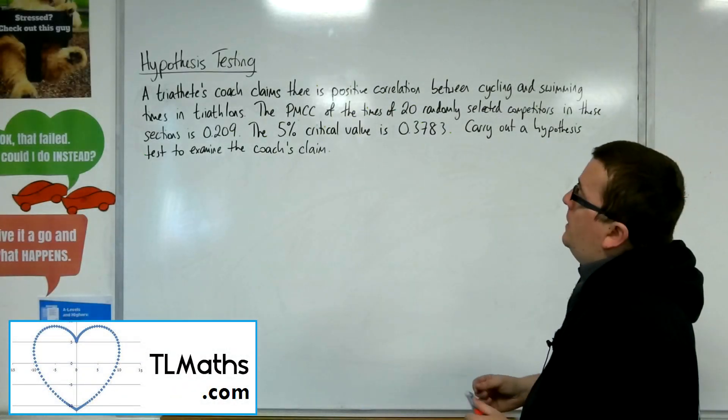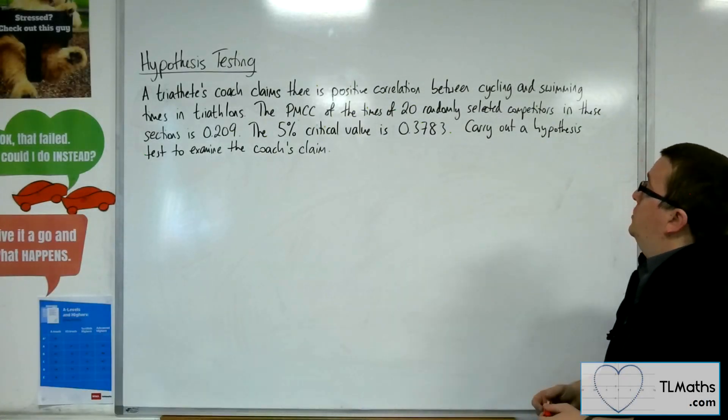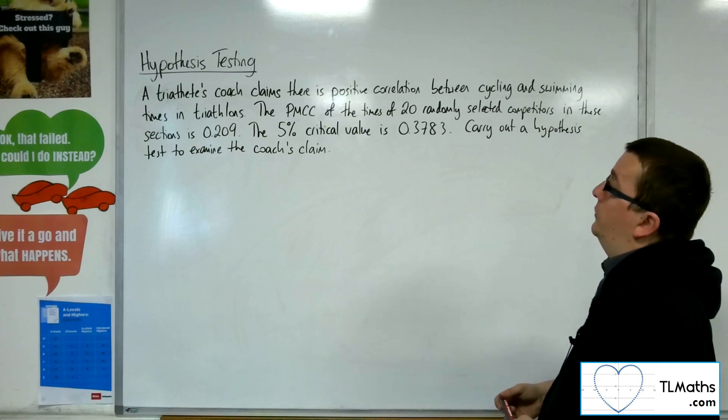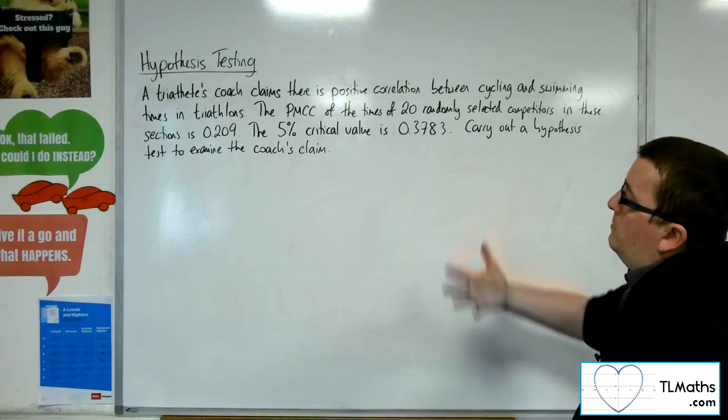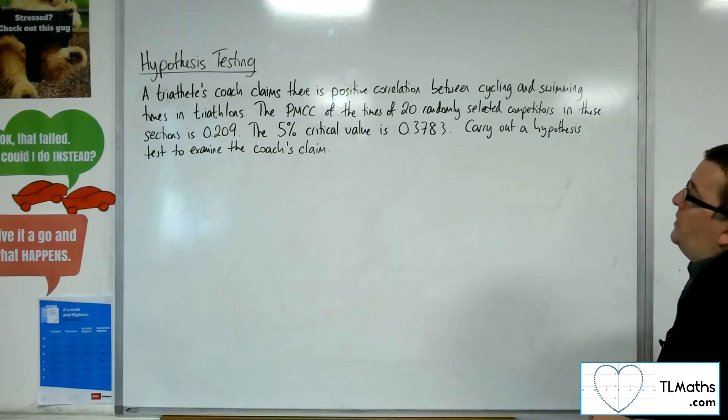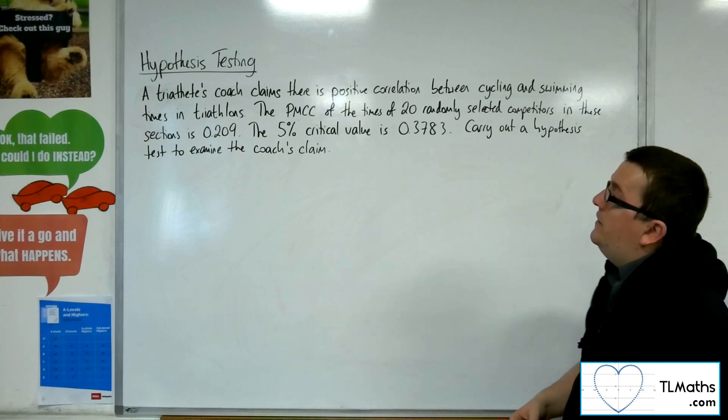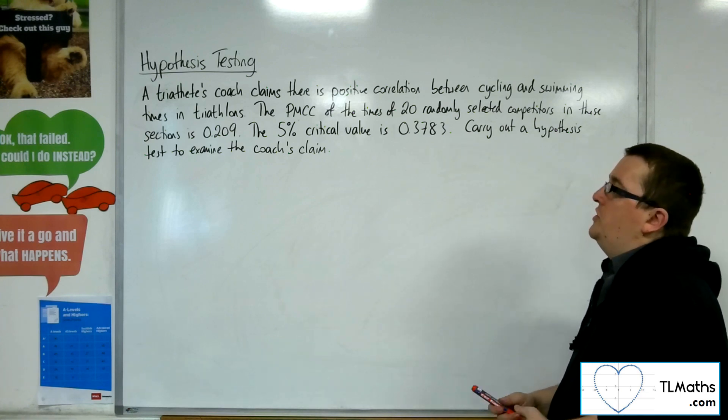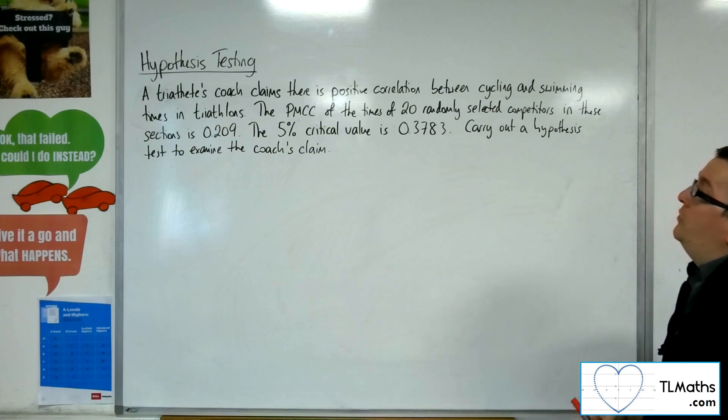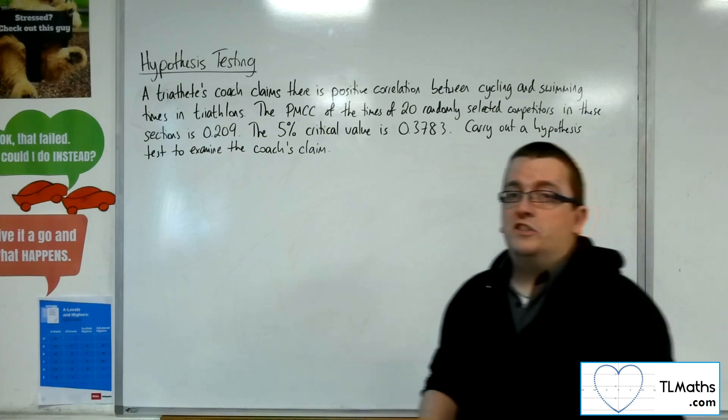A triathlete's coach claims there is positive correlation between cycling and swimming times in triathlons. The sample product moment correlation coefficient of the times of 20 randomly selected competitors in these sections is 0.209. The 5% critical value is 0.3783. Carry out a hypothesis test to examine the coach's claim.